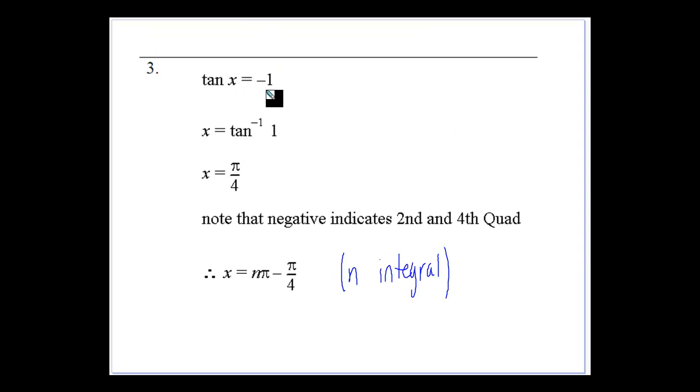tan x is equal to negative 1. Now, what is a little bit different is that because it's negative 1, our quadrants that we're going to deal with are going to be in the second and fourth quadrants. So we're going to have to go back to our related angle, and our related angle inverse tan of 1 is π/4.